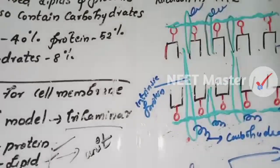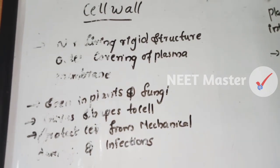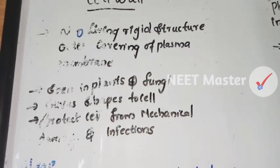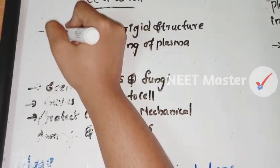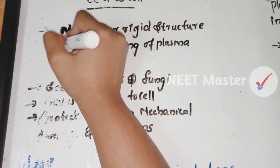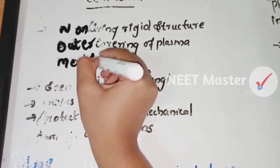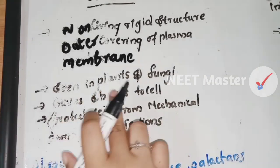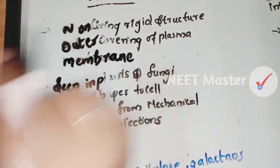Now let's take the cell wall. The cell wall is a non-living rigid structure and is the outer covering of the plasma membrane. It is seen in plants and fungi. There is no cell wall in animals.